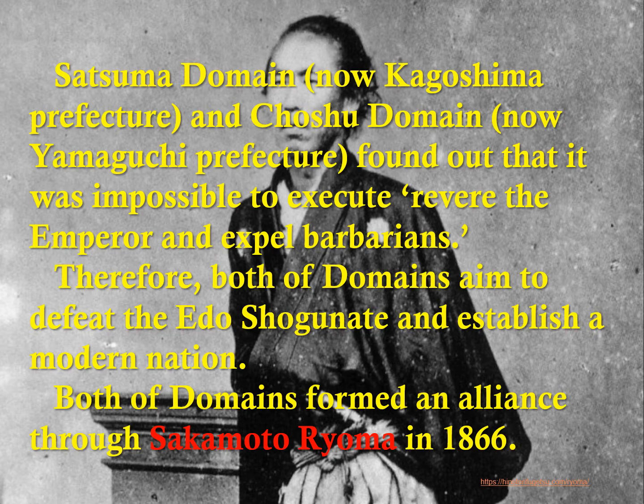The Satsuma domain and Choshu domain found out that it was impossible to execute Riviera the Emperor and expelled barbarians. Therefore, both domains aimed to defeat the Edo shogunate and establish a modern nation. Both domains formed an alliance through Sakamoto Ryoma in 1866.